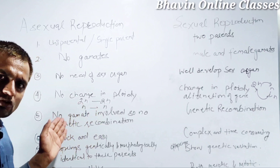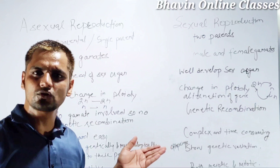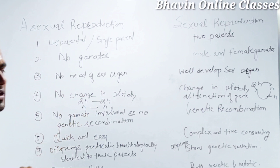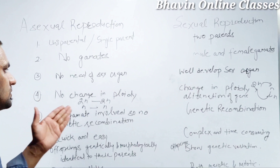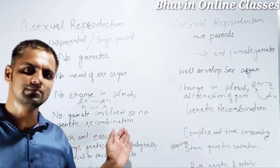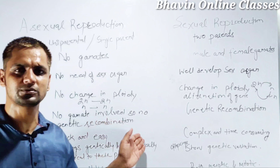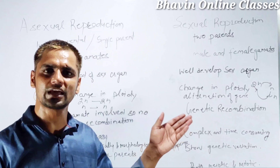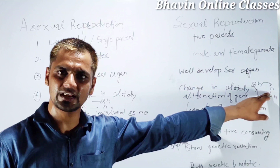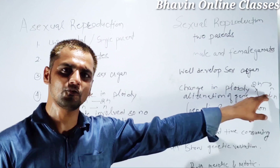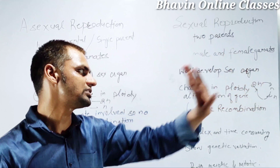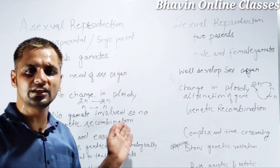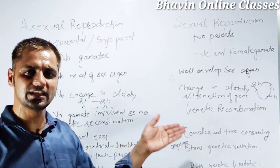In asexual reproduction, there is no need for sex organs, but in sexual reproduction, well-developed sex organs can be seen. There is also no change in ploidy levels in asexual reproduction — a diploid organism produces diploid offspring — whereas in sexual reproduction, alternation of generation occurs. Additionally, no genetic recombination can be seen in asexual reproduction, while in sexual reproduction genetic recombination is easily observed.